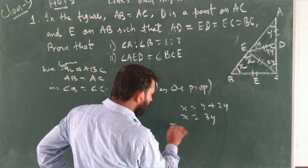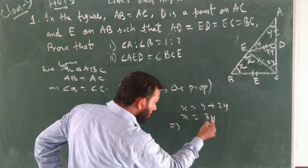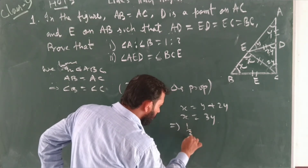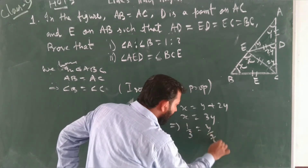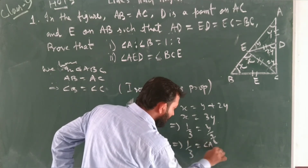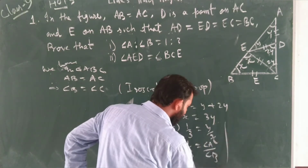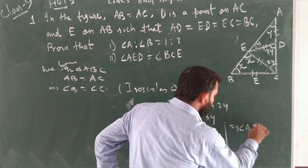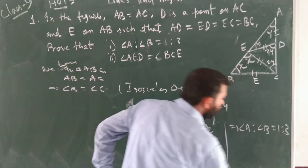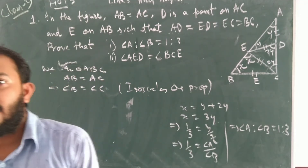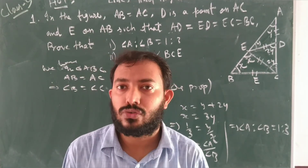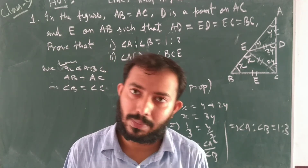From X equals 3Y, we get 1 by 3 equals Y by X. Since Y is angle A and X is angle B, this gives us angle A to angle B equals 1 to 3. We have applied exterior angle property and isosceles triangle property — two properties in total.